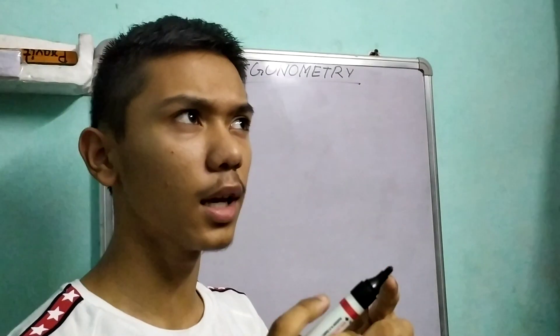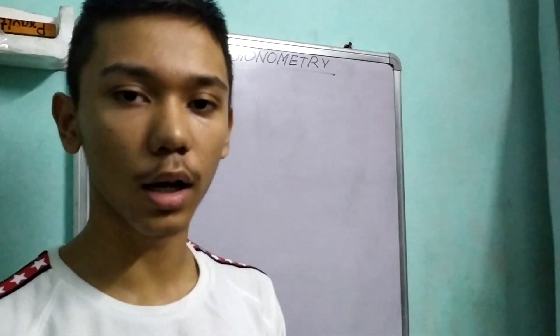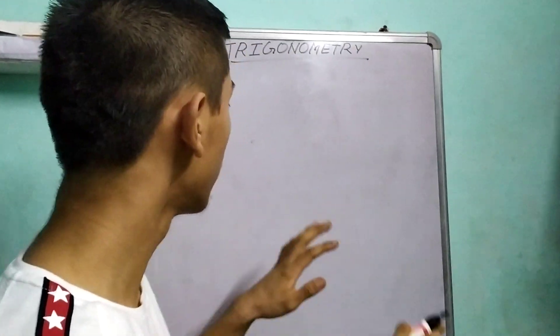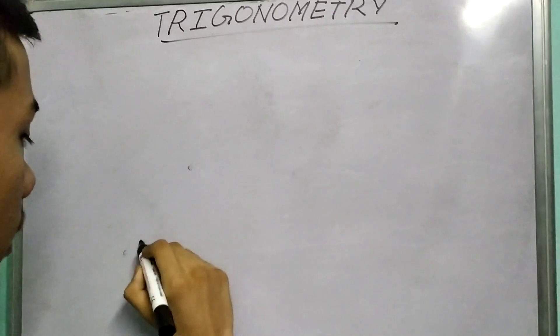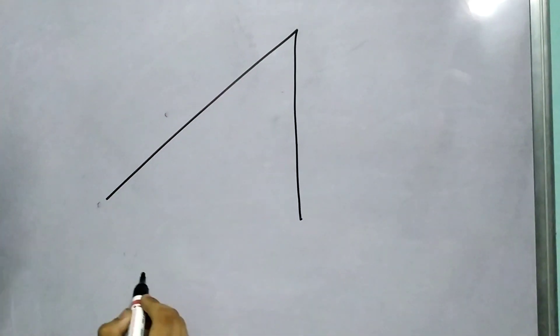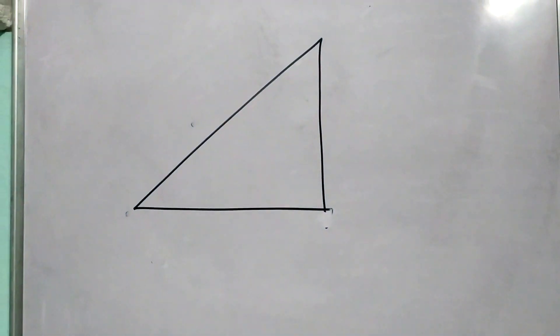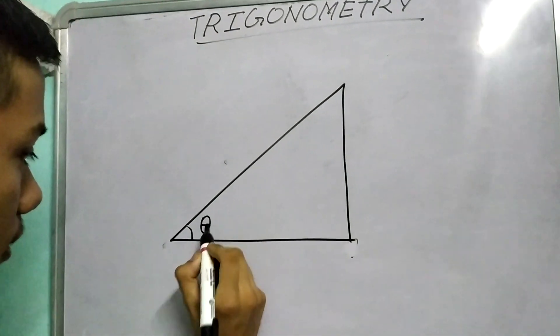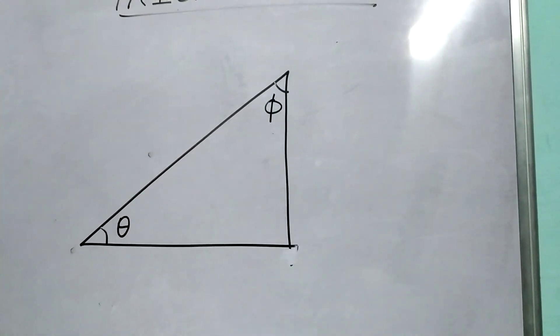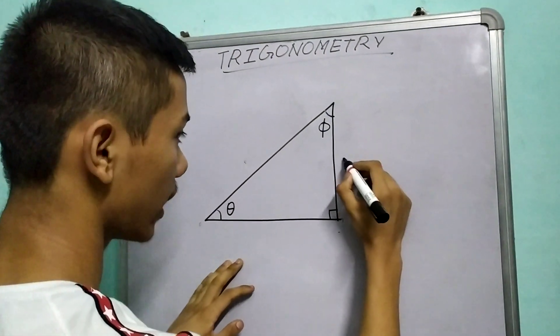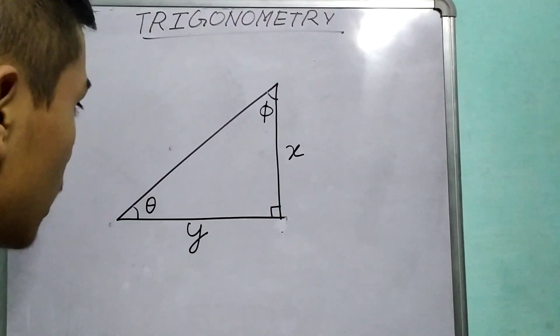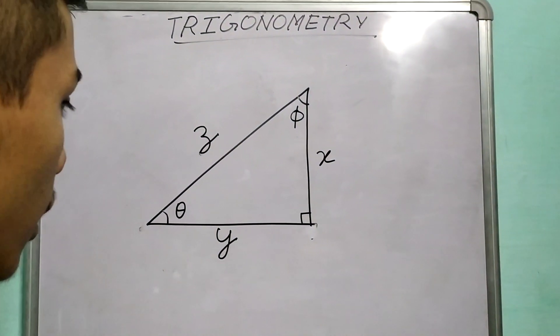If you watch my second video closely and look at how these ratios are defined as the ratio of sides, this will be very helpful when we talk about the equality of these ratios. So first let me draw a right angle triangle. Let us call this angle theta and this angle phi, and this will be 90 degrees. Now let us label the sides: this is x, this is y, and this is z.